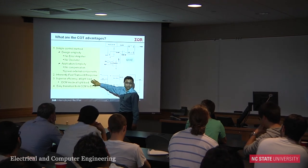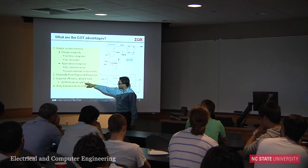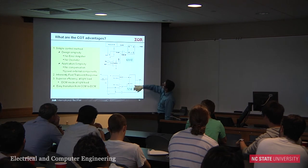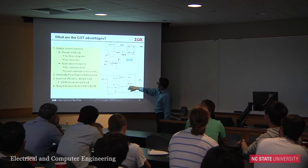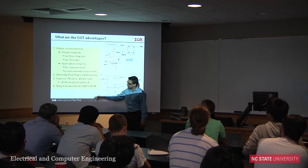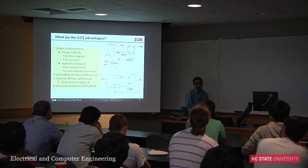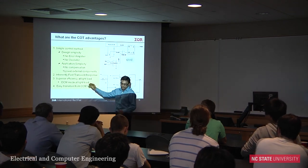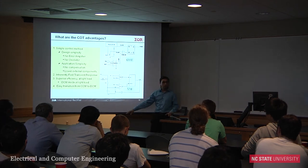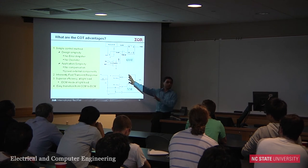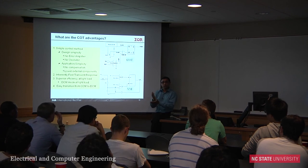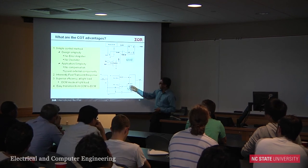CCM stands for continuous conduction mode and DCM stands for discontinuous conduction mode. In DCM, you can reduce switching frequency dramatically — for example, from 500 kHz down to less than 1 kHz — which greatly reduces switching losses at light load. The CCM-to-DCM transition is not trivial in voltage mode, but with constant on-time it happens naturally.